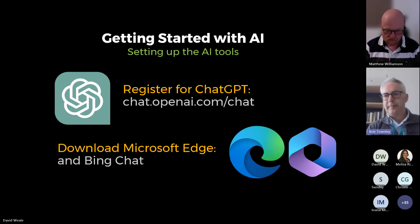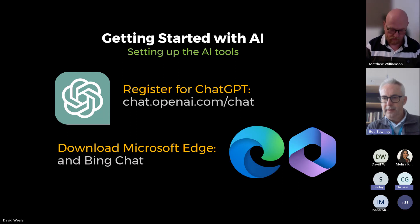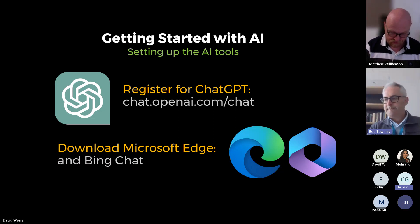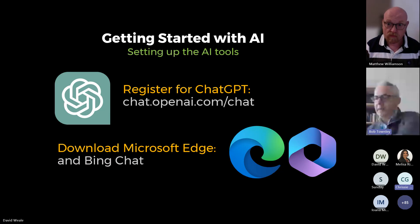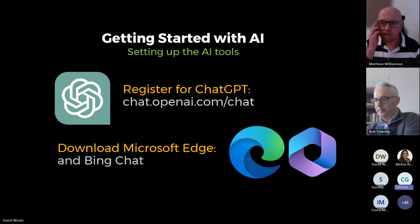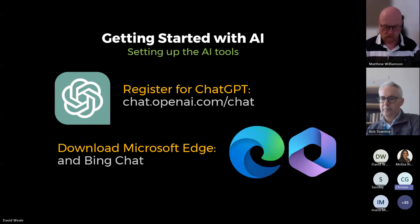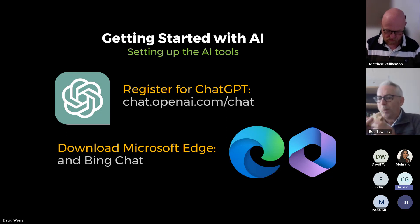The AI tools we're going to cover today are mainly ChatGPT 3.5, which is the free version, and Microsoft Bing Chat, recently renamed Copilot, though within Copilot is Bing Chat. Those are the two main tools we'll focus on today. When you give instructions to a chatbot, they're termed prompts. We're trying to show students the type of prompts they can put in to gain relevant feedback and information about their work.